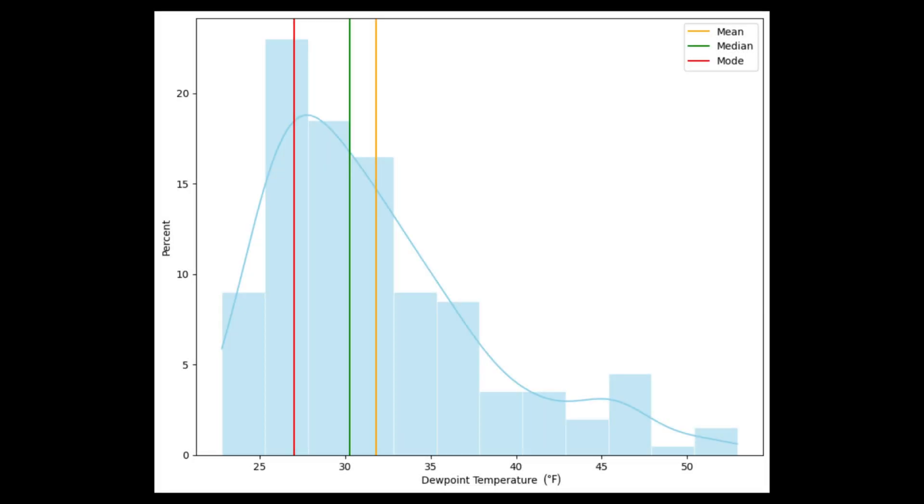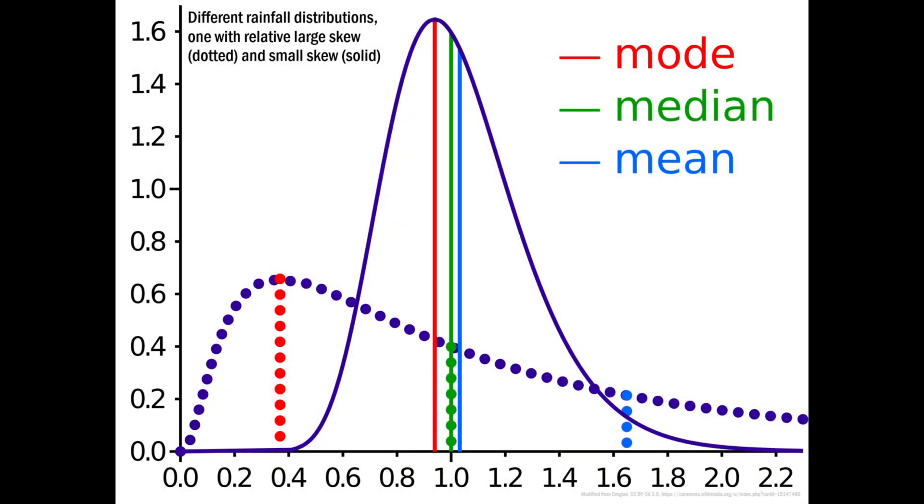The opposite is true for a right skewed distribution. The median will be to the right of the mode, and the mean will be to the right of the median. The space between the mean, median, and mode will determine how much skew there is to the distributions. Small spacing is a slightly skewed distribution. Large spacing is a highly skewed distribution.